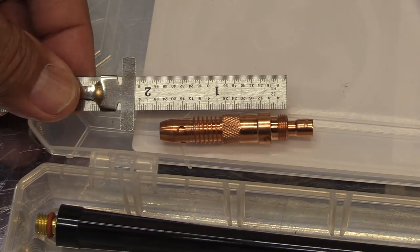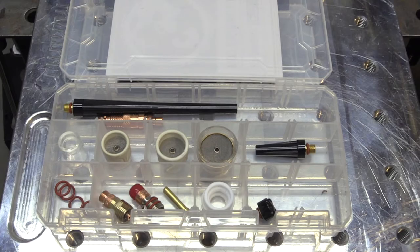Best way to tell what kind of torch you have is just look at the collet body. If it's close to two inches long, this is the kit for you.